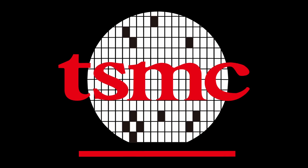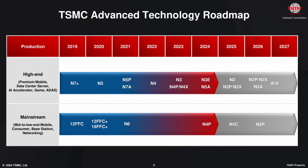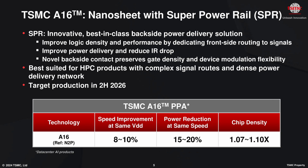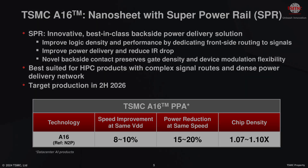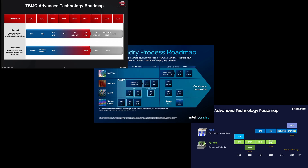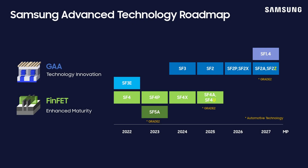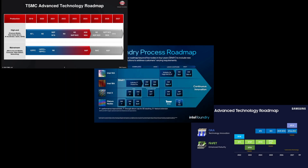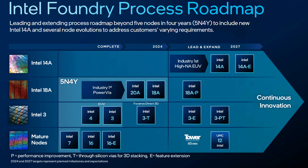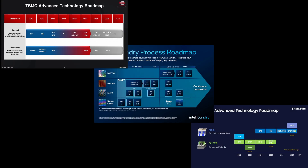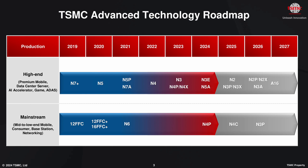Last but certainly not least is TSMC. TSMC is a bit more conservative in their technology roadmap. GAA transistors will be introduced with their next-gen N2 product family, while backside power delivery will follow at a later point with A16. TSMC calls their GAA implementation nanosheets. And if I had to guess, I'd say it's very likely that Apple will be the first customer using TSMC's N2 node with gate-all-around transistors — maybe as early as late next year. As you can see, all three leading foundries are very close when it comes to the introduction of gate-all-around field-effect transistors into their process nodes.